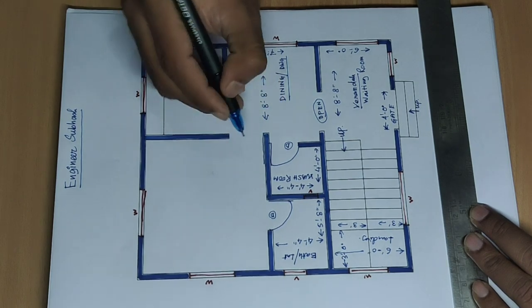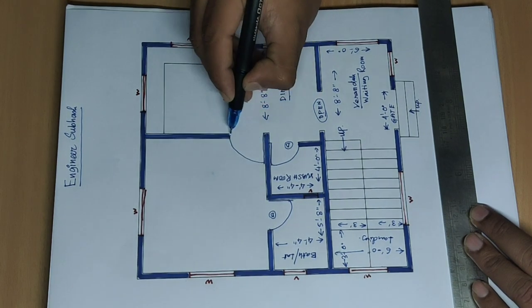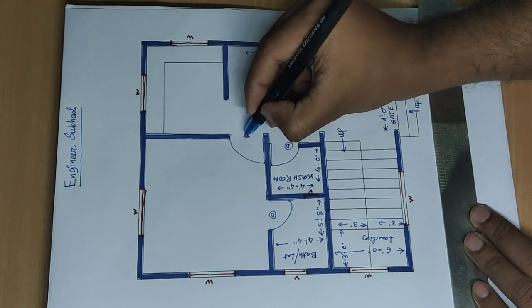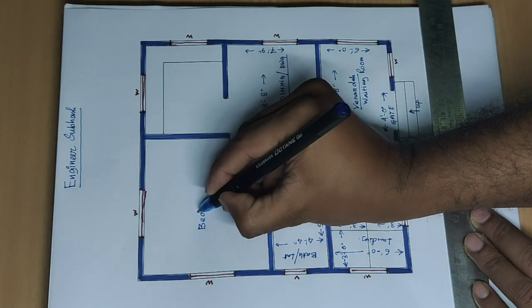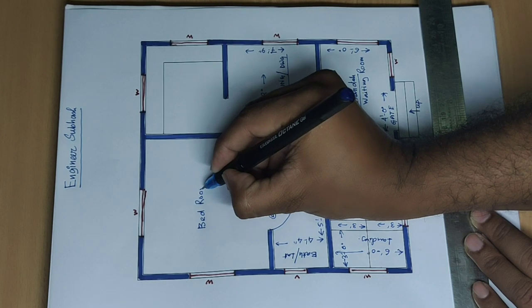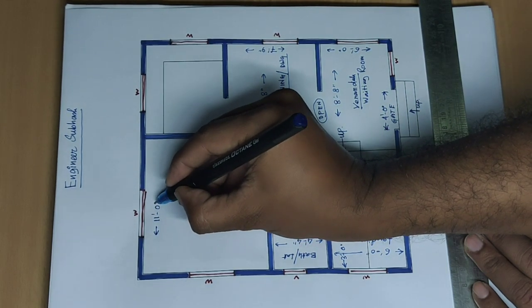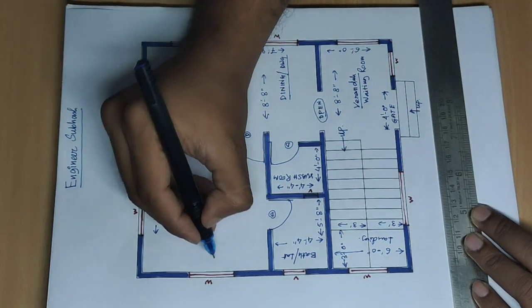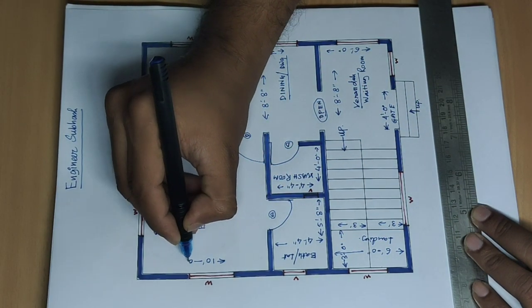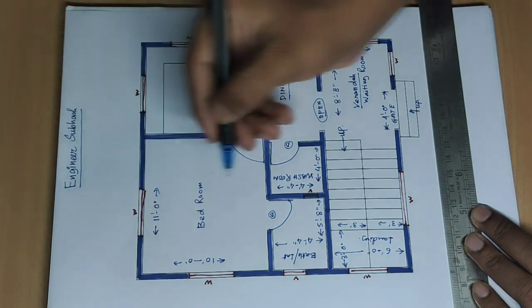Door, bedroom one. Bedroom size 11 feet and other side 10 feet, 11 feet by 10 feet.